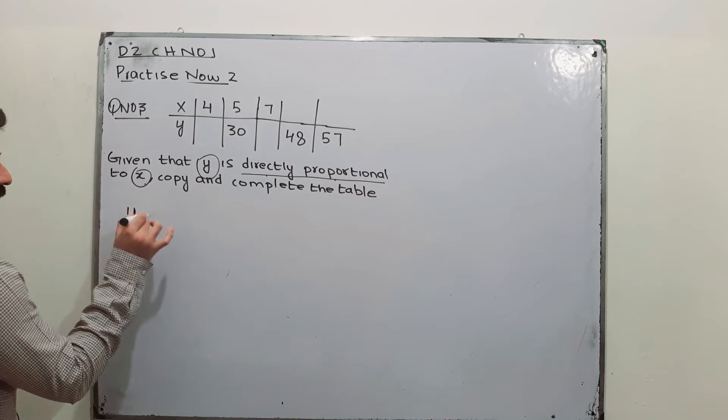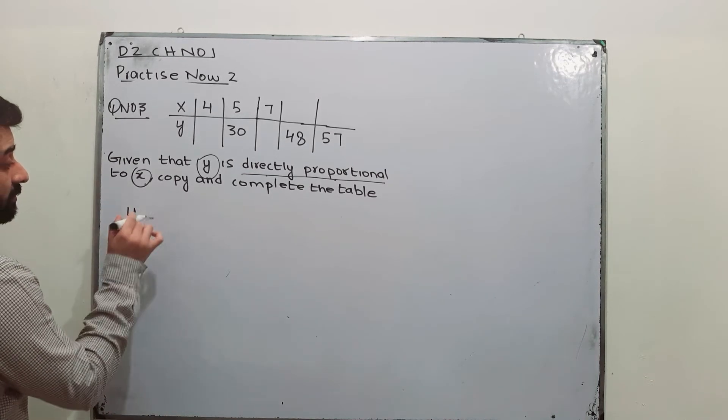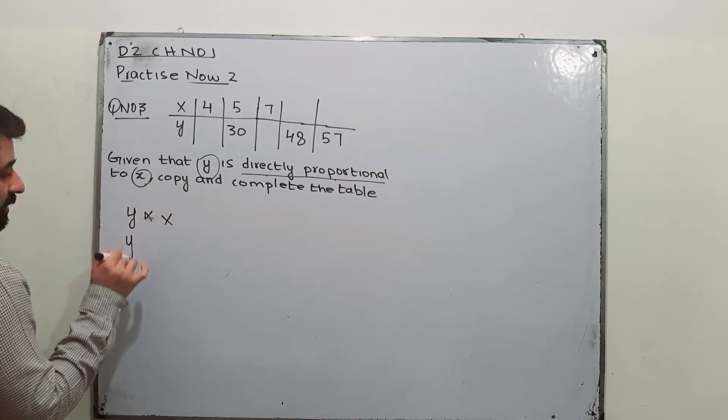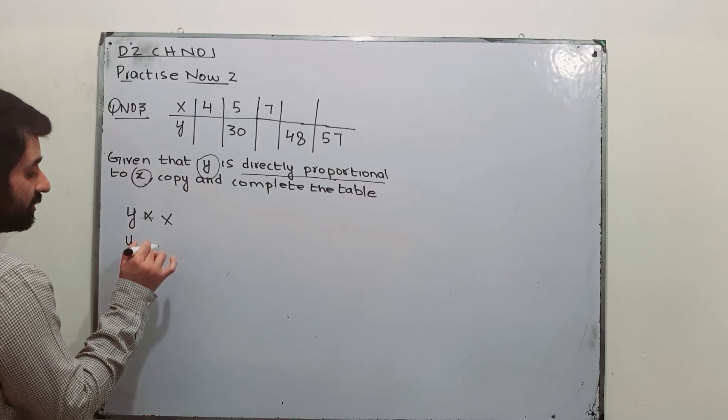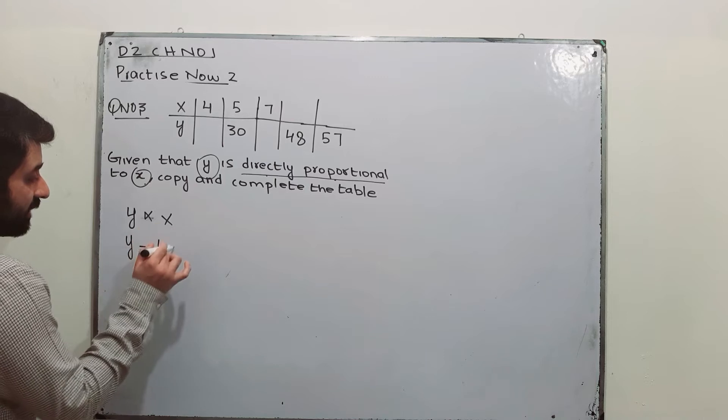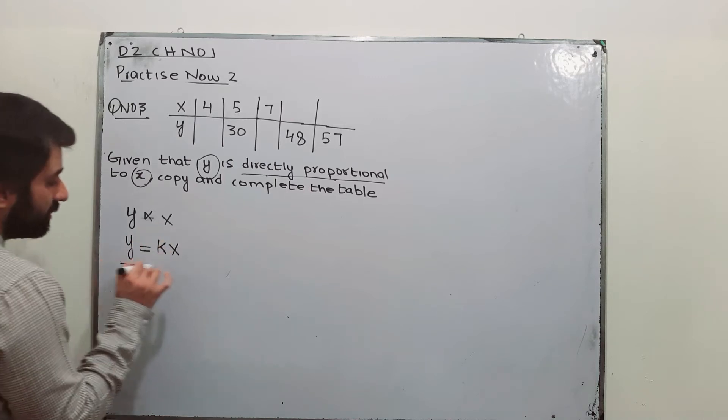So you have to write here, Y is directly proportional to X. Proportionality sign is replaced by equality sign by inserting a constant which is K and X will be as it is. This is your equation.